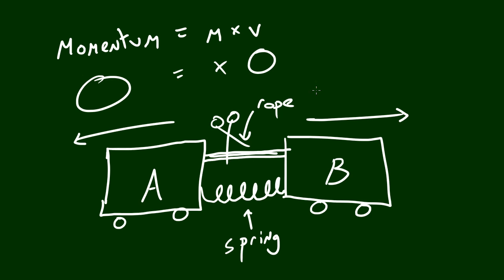It may be easier to understand if we gave these carts values. Let's give them both a mass of 10 kilograms and we'll say that once that rope was cut they started moving at 5 meters per second. So 5 meters per second to the left and this one started moving 5 meters per second to the right.